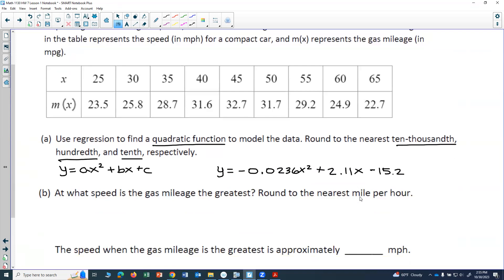At what speed is the gas mileage the greatest? Round to the nearest mile per hour. All right, so let's think about what this is actually asking us. It would be the greatest when we have a maximum, right? At what speed is the gas mileage the greatest? So in other words, where is y the greatest? Now we know that we have a parabola that goes like this, and we know that there's a maximum right there. So there's our max, and that's what we're trying to find.